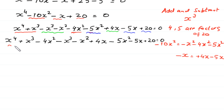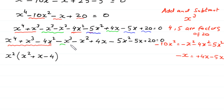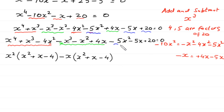From the first group, x to the power 4 plus x cubed minus 4x squared, we factor out x squared to get x squared times (x squared plus x minus 4). From the second group we factor out negative x, giving negative x times (x squared plus x minus 4). From the third group we factor out negative 5, giving negative 5 times (x squared plus x minus 4), all equal to 0.